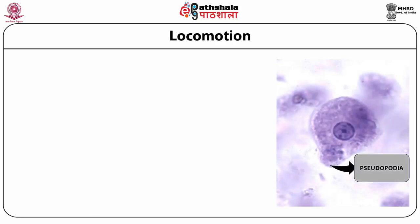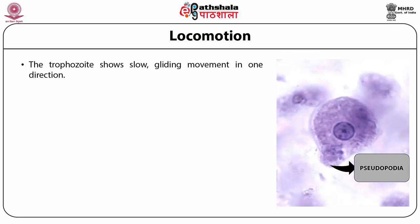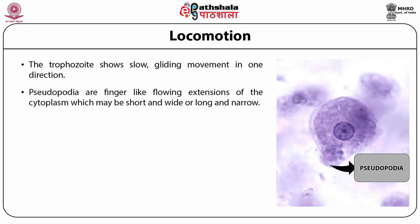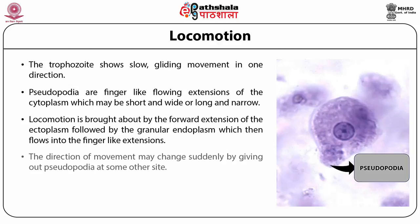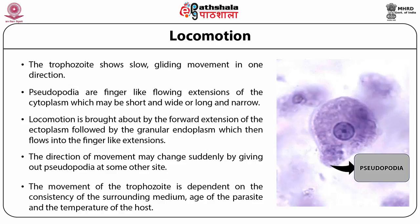Regarding locomotion, trophozoites show slow gliding movement in one direction with the help of pseudopodia. Pseudopodia are finger-like flowing extensions of the cytoplasm, which may be short and wide or long and narrow. Locomotion is brought about by the forward extension of the ectoplasm followed by the granular endoplasm flowing into the finger-like extension. The direction of movement may change suddenly. The movement depends on the consistency of the surrounding medium, age of the parasite, and temperature of the host.